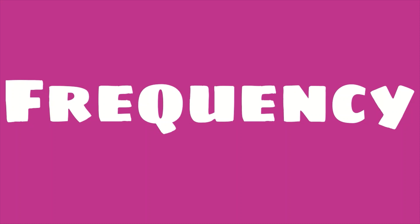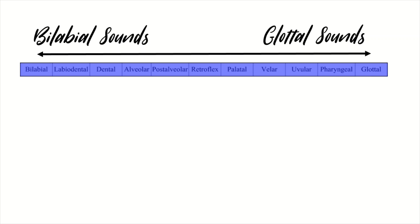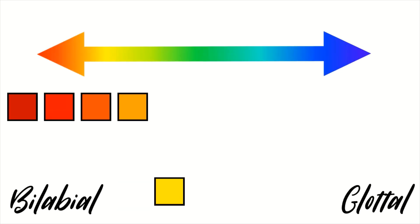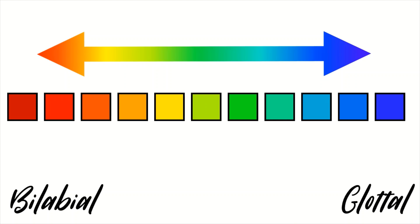Let's make a spectrum for the places of articulation, stretching from bilabial sounds all the way to the glottals. And we're going to distinguish between these with colours. The warmer colours will signify articulation towards the front of the mouth, and the cooler ones will represent articulation at the back of the mouth.